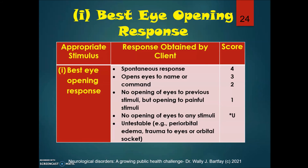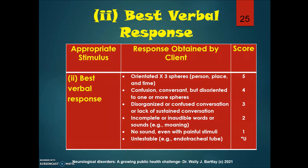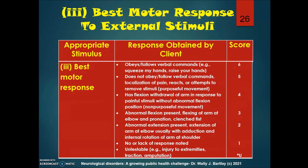For best verbal response, the maximum score indicates the patient is oriented times three — meaning oriented to person, place, and time: they know who they are, where they are (such as in a hospital), and the time — whether it's night or day, or the month and year. Lower scores reflect increasing confusion. Sometimes verbal response cannot be tested if the patient has an endotracheal tube in place or requires ventilation. For best motor response, we assess whether the patient can follow commands — such as squeezing hands, raising a hand, or blinking twice.